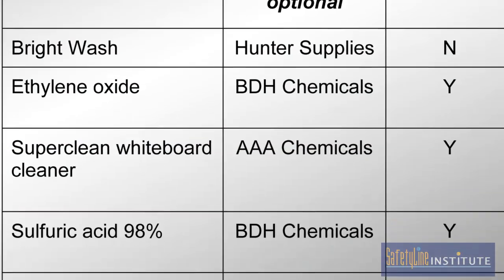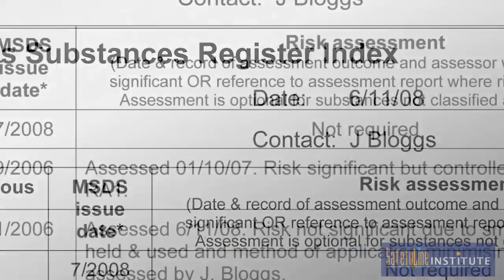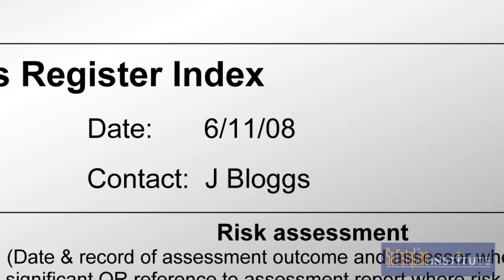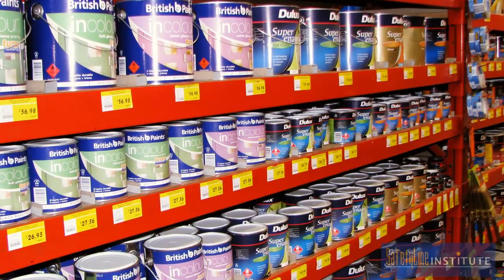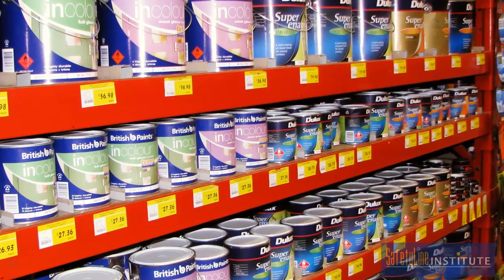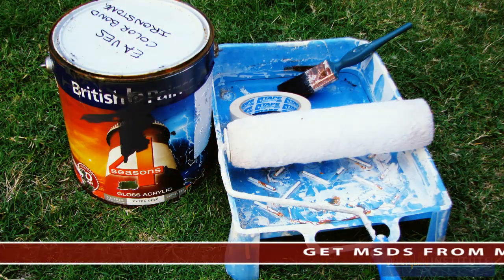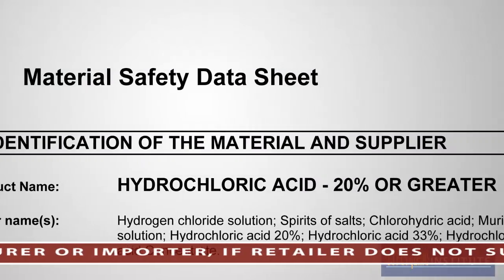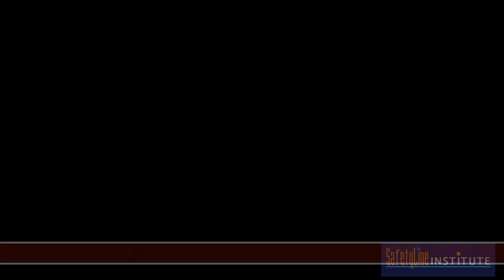Once the hazardous substances have been identified, they must be listed in a hazardous substances register, which must also reference the risk assessments that have been done. The register must also hold the relevant MSDS, be kept up-to-date, and be easily accessible to workers, as it is the main source of information about hazardous substances at the workplace. Retailers do not need to have a register or hold copies of the MSDS for products in containers smaller than 30 kg or 30 litres that are only opened by the customer off the premises. MSDSs are still available for hazardous substances bought from retailers by contacting the manufacturer or importer using the contact details on the label.